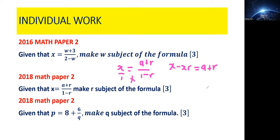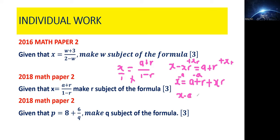Our interest is to make r the subject. Get rid of negative xr by adding xr to both sides — the terms cancel, leaving x equals a plus r plus xr. Then subtract a from both sides to get x minus a equals r plus xr.